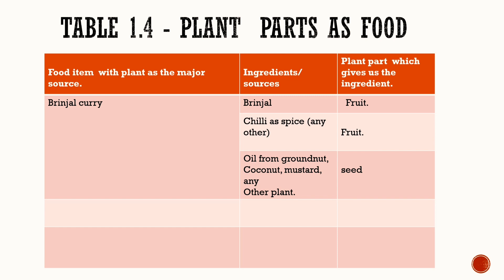Here is another example: when we make a brinjal curry, the main ingredients are brinjal, chili, and oil. Brinjal is the fruit part of the plant, and chili is also the fruit part of the plant. Then we use oil, which we get from seeds — that means the seeds part of plants — for example, from coconut, mustard, or any other plant.